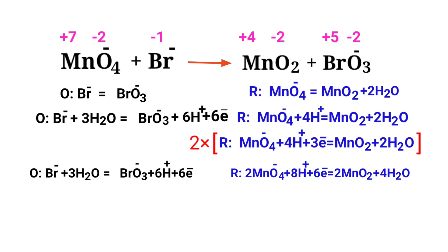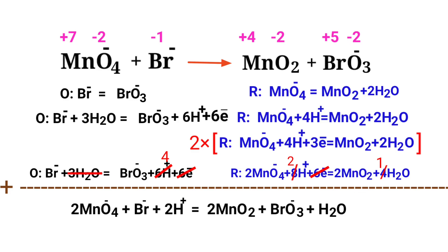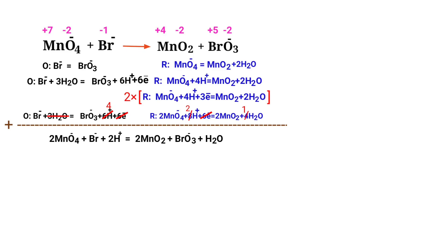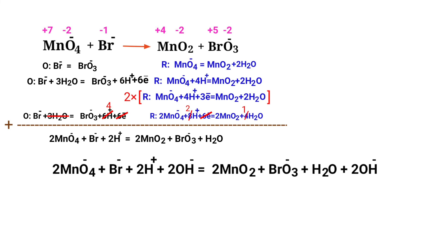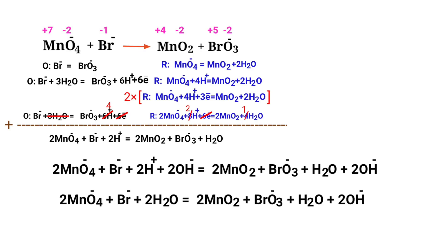Now add both half reactions together and cancel the same terms. For a reaction in basic medium, add one OH⁻ for every H⁺ present in the equation. The OH⁻ must be added to both sides to keep charge and atoms balanced. Then combine OH⁻ and H⁺ that are on the same side to form water.